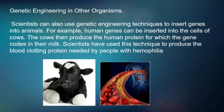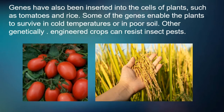Genetic engineering in other organisms. Scientists can also use genetic engineering techniques to insert genes into animals. For example, human genes can be inserted into the cells of cows. The cows then produce the human protein from which the gene came in their milk. Scientists have used this technique to produce the blood clotting protein needed by people with hemophilia. Genes have also been inserted into the cells of plants such as tomatoes and rice. Some of these genes enable the plants to survive in cold temperatures or in poor soil, and genetically engineered crops can resist insect pests.